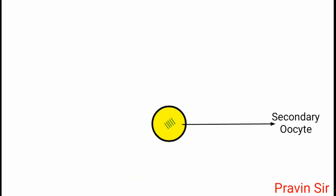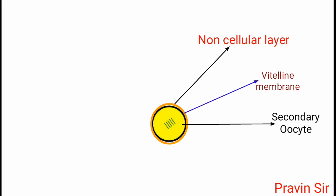Secondary oocyte has a membrane called vitelline membrane. Vitelline membrane produces non-cellular layer of zona pellucida. So this region is called as zona pellucida.